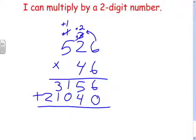Then you just add those two together: six; five plus four is nine; one; four; two. Twenty-four thousand one hundred ninety-six.